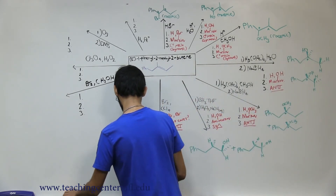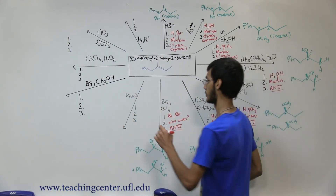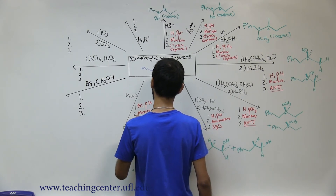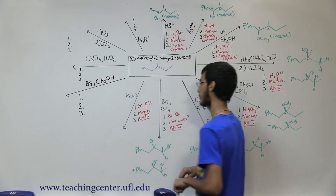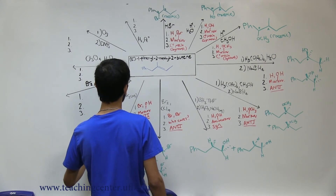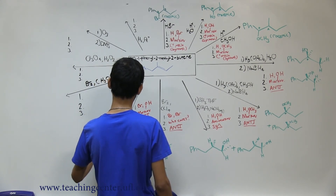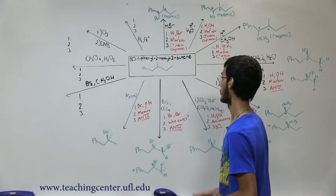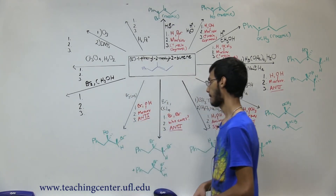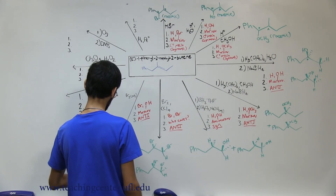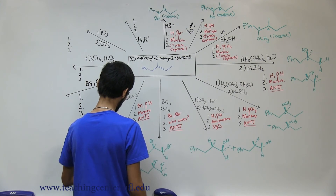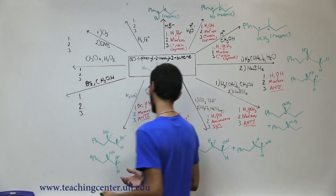The next reaction is Br2 in aqueous conditions. The aqueous means water is present, so this is bromohydrin formation. We add Br and OH; the OH is Markovnikov; and it's anti addition. We add the OH to the Markovnikov position. First product: OH adds up, pushing the methyl back, so the Br adds down. Second product: OH adds down and the Br adds up. Those are your two products from bromohydrin formation.